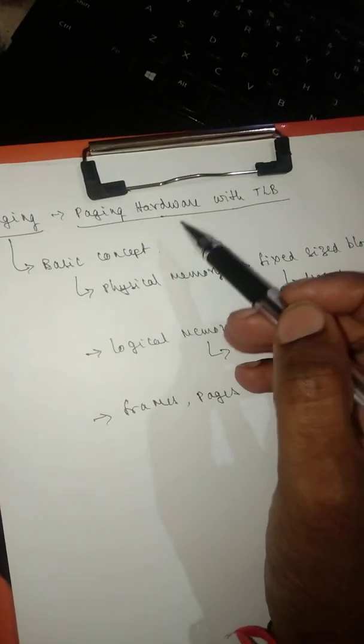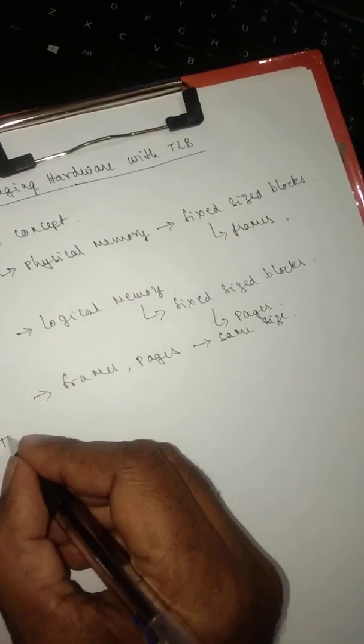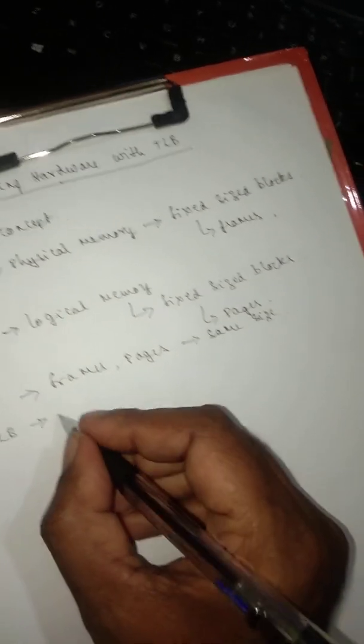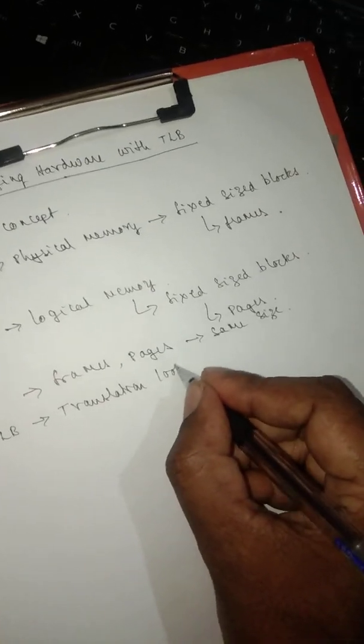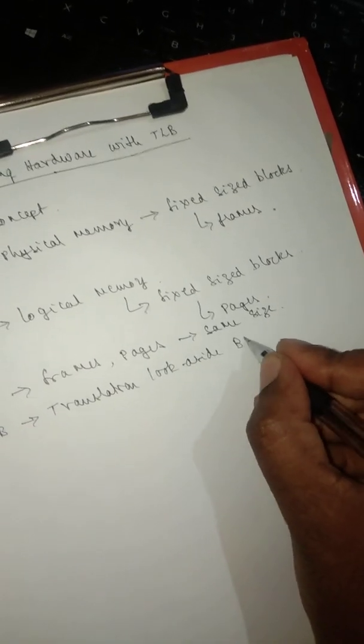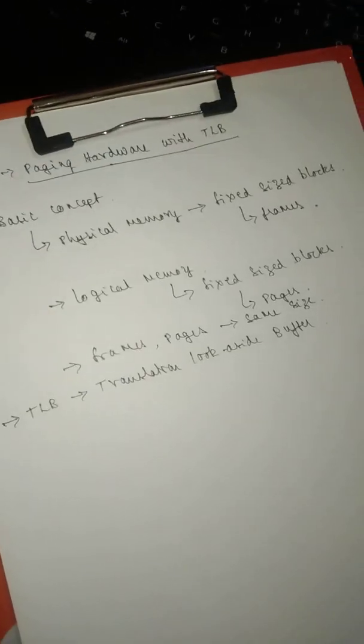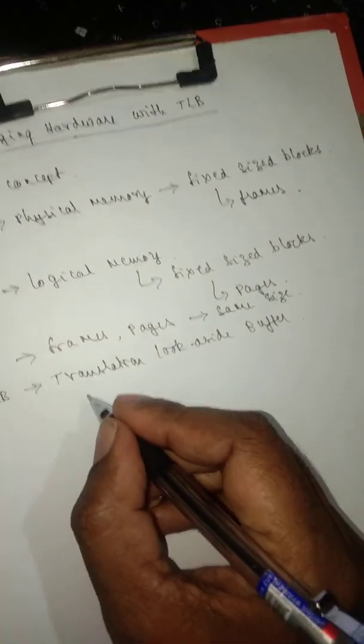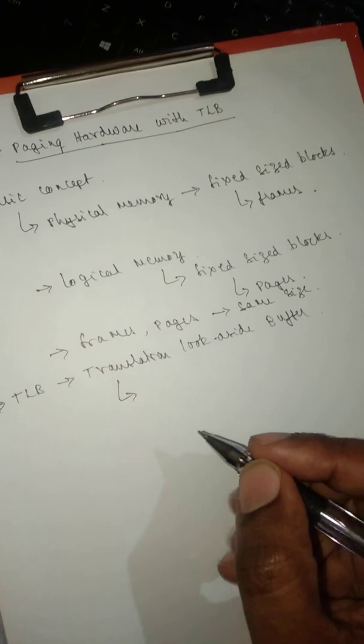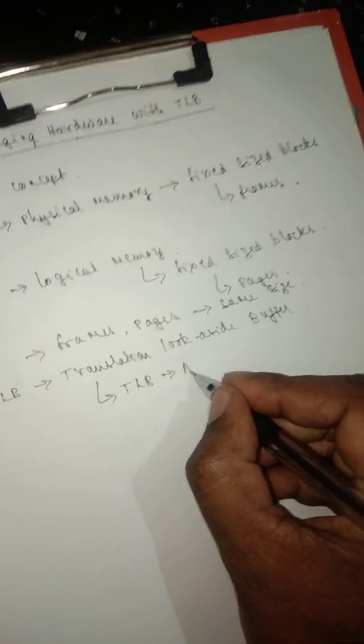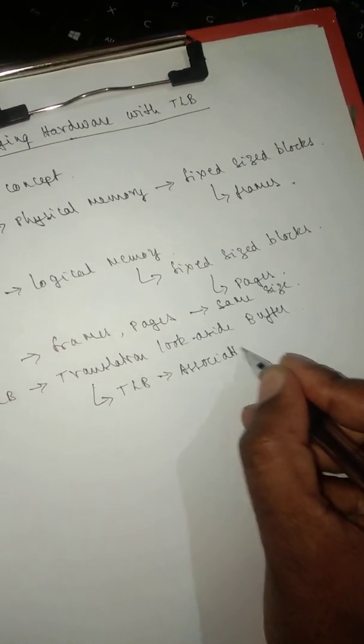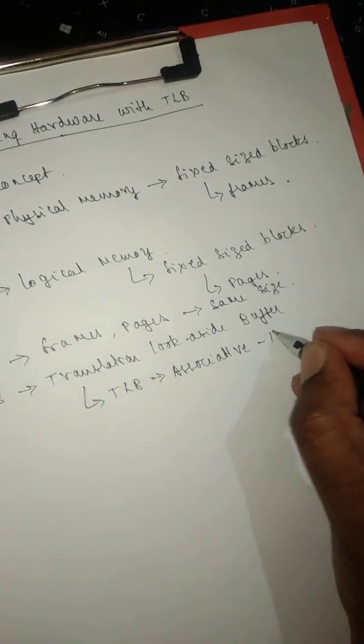Now let's see the paging concept implemented with TLB. TLB stands for Translation Look-aside Buffer. While implementing with TLB, we need to remember one key aspect: this TLB is an associative high-speed memory.